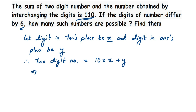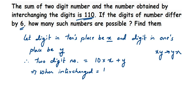Now when we interchange the digits, in place of x it will be y and in place of y it will be x. So the ones and tens places are interchanged, giving 10y plus x. The question says if we add the original 2-digit number and the interchanged number, the sum equals 110. So I'm going to add: (10x + y) + (10y + x) = 110.